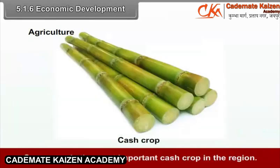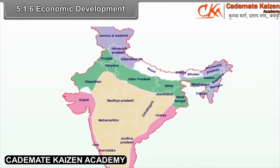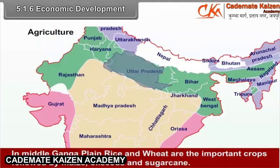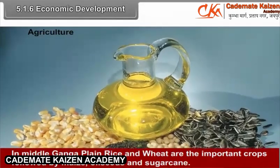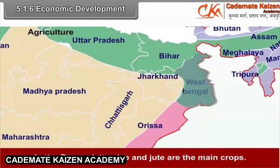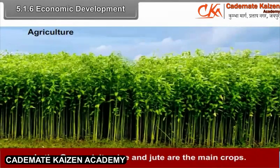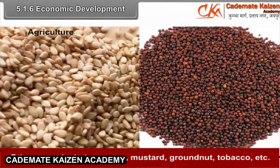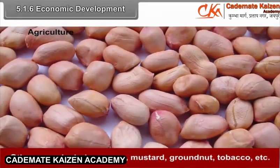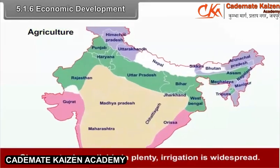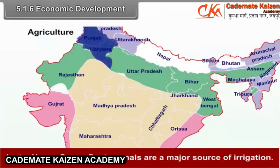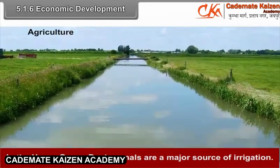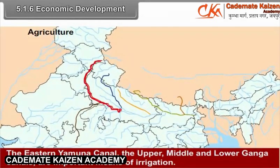Sugarcane is the most important cash crop in the region. In the middle Ganga Plain, rice and wheat are the important crops followed by maize, oilseeds and sugarcane. In the Ganga Delta, rice and jute are the main crops. Other crops include sesame, mustard, groundnut, tobacco, etc. Since water is available in plenty, irrigation is widespread. In the upper Ganga Doab, canals are a major source of irrigation. The eastern Yamuna canal and the upper, middle and lower Ganga canals are important means of irrigation.